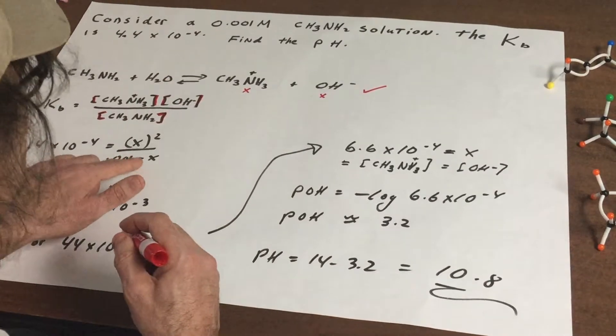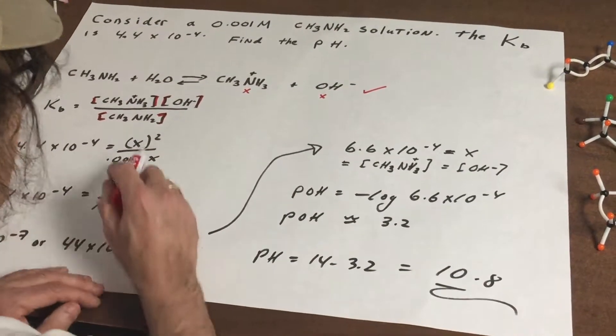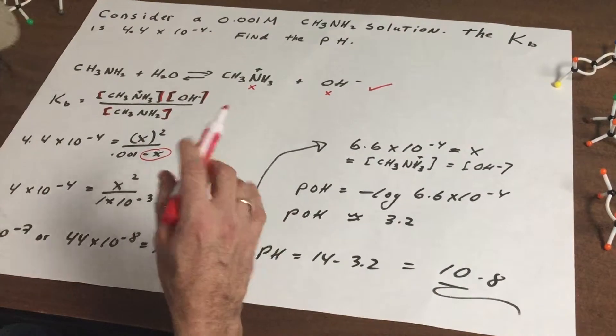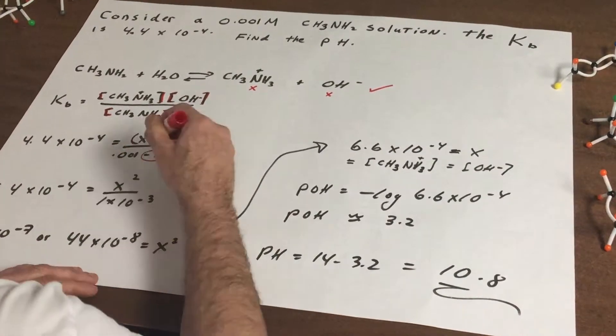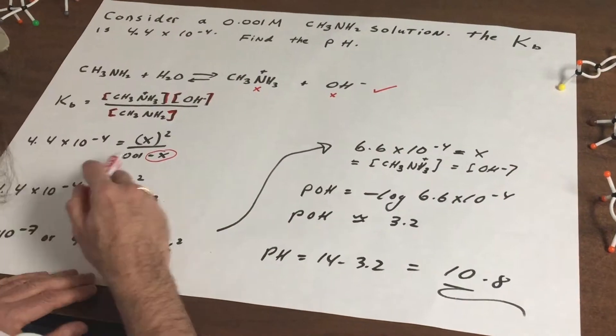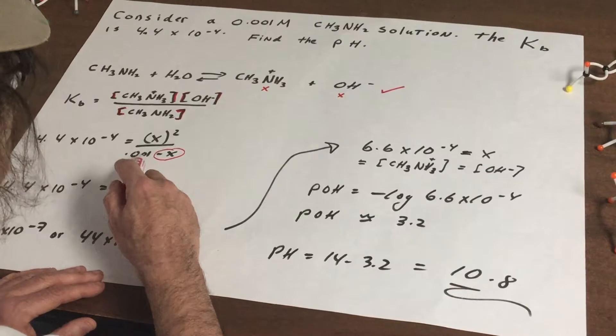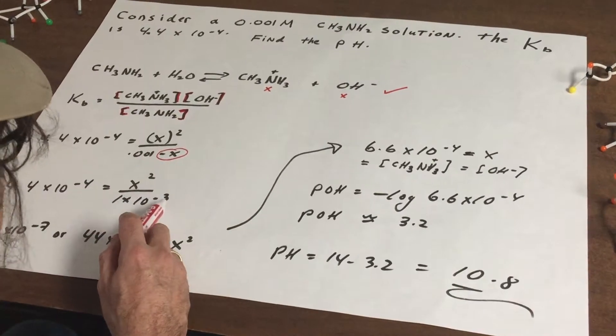As you can see here the equilibrium amount is 0.001. Now for the DAT we're always going to assume that this denominator, this small amount of X is negligible so I'm going to delete it out. So now it becomes 4.4×10^-4 equals X² over 0.001 which is 1×10^-3.